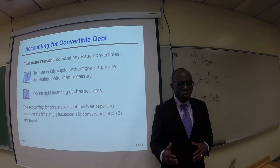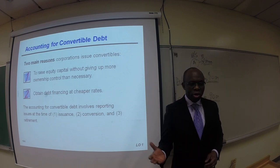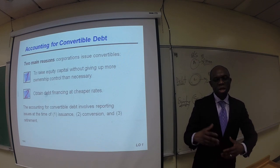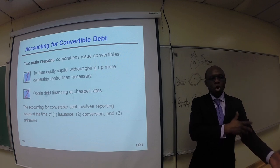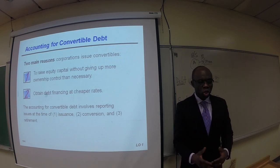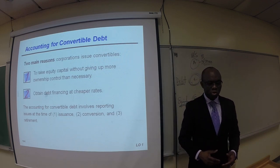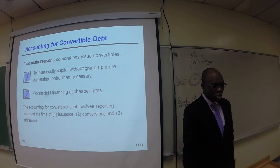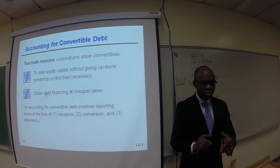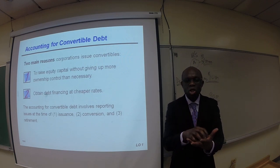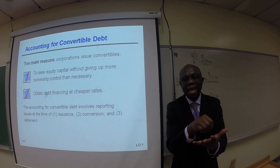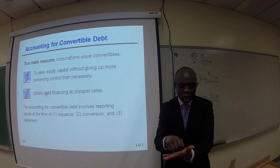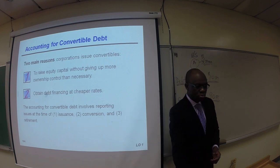There are two main reasons corporations issue convertible debt. First, to raise capital without giving up more ownership control than necessary — with convertible bonds, you are not giving up ownership until the bonds are actually converted. Second, to obtain debt financing at a cheaper rate. The accounting for convertible debt involves reporting issues at the time of issuance, conversion, and retirement.